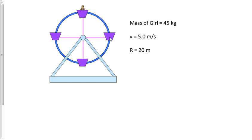This is a vertical circle, so the two equations we want are centripetal force and force of gravity. Force centripetal equals her mass multiplied by the velocity squared divided by the radius, and that equals 56 newtons.